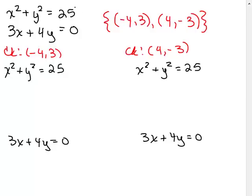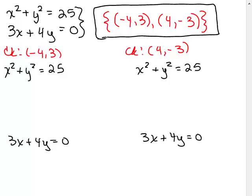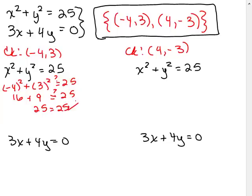All right, so we have our original system right here. And this is what we got for our answer. We have two ordered pairs. And so now we're going to check each of those ordered pairs to make sure it's true. So we're going to plug in negative 4 for x and 3 for y in each of these two equations. So let's do that. I'm going to plug in negative 4 for x and 3 for y. And the question is, does that equal 25? Let's see. Well, when you square a negative, you get a positive. So 16 plus 9 equals 25. Yes, that's definitely a solution.